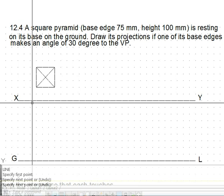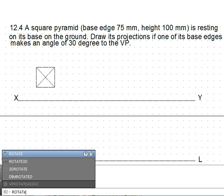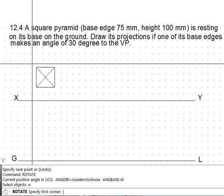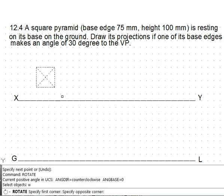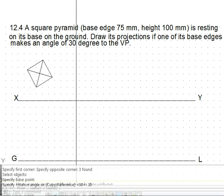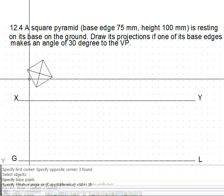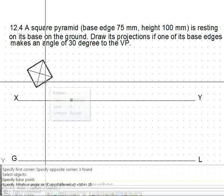So to make one of the base edge 30 degree angle, what we do is rotate this object in the top view around one of the corners by 30 degree so that the condition of the base edge making 30 degree angle with VP is satisfied. The angle with VP will be shown in the top view, that is why we have rotated the top view of the object.